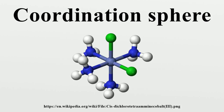In hexaamminecobalt chloride [Co(NH3)6]Cl3, the cobalt cation plus the six ammonia ligands comprise the first coordination sphere. The coordination sphere of this ion thus consists of a central CoN6 core, decorated by 18 N–H bonds that radiate outwards.